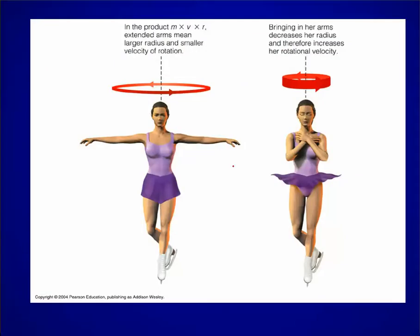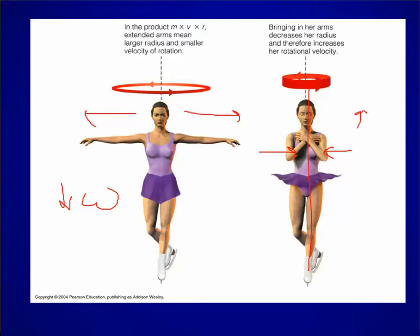Again, we see a ballet dancer where the moment of inertia is large, so you'd have a decreased velocity. And here, bringing your mass closer to the longitudinal axis decreases the moment of inertia, so you increase your angular velocity. This is a skater demonstrating the same principle.